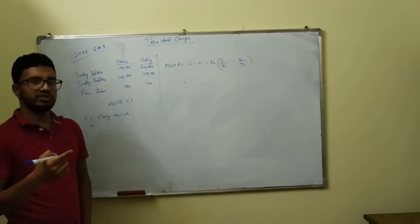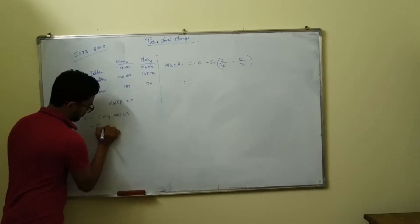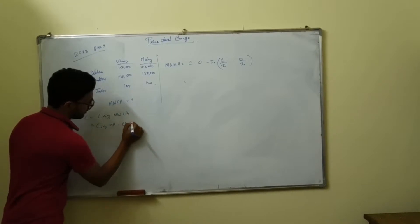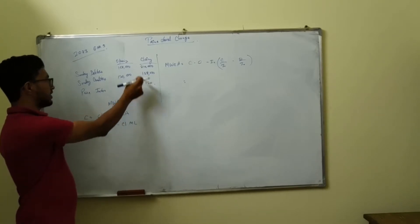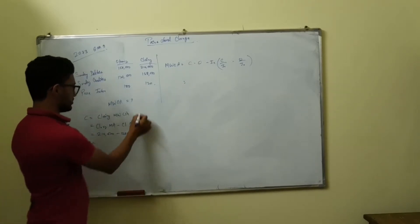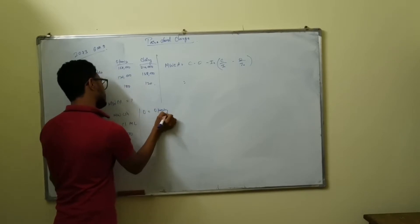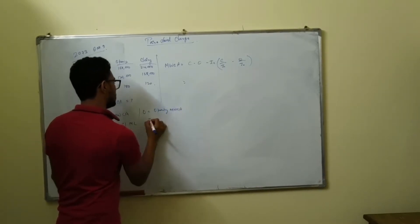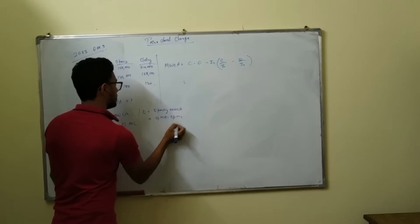Monetary working capital is what we know is monetary assets minus monetary liabilities, which is closing monetary assets minus closing monetary liabilities. O is equal to opening MWCA, which is opening MA minus opening ML.